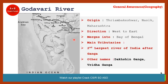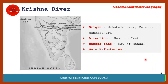The next important river is Krishna. Its origin is Mahabaleshwar, Satara, Maharashtra. It also flows from west to east and finally merges into the Bay of Bengal.